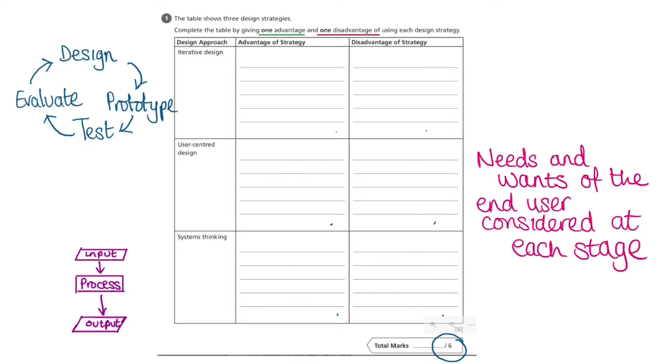Now that we have ensured we have recalled the three different approaches and that we are certain we know what each one is, we should consider the advantages and disadvantages of each. When you complete this question, I would recommend completing both the advantage and disadvantage of each design strategy at the same time, rather than doing all of the advantages first and then all of the disadvantages, as I find that this may confuse me between the different design strategies. To help me identify the advantages and disadvantages of iterative design first, I will refer back to the diagram that I have written next to this design strategy.